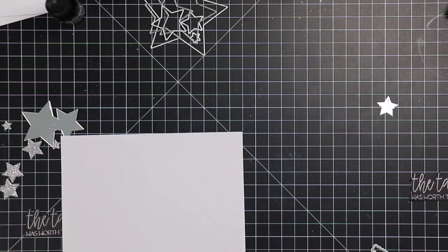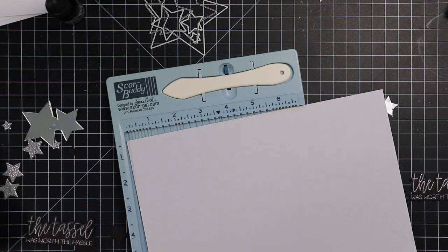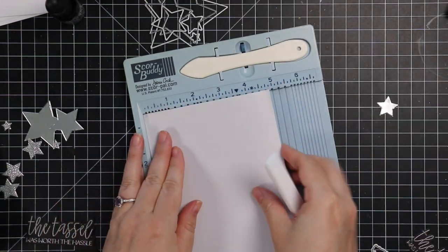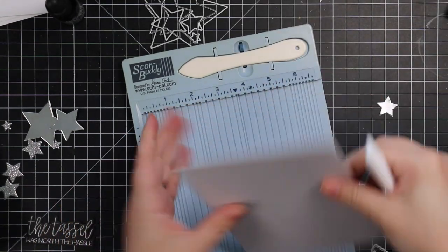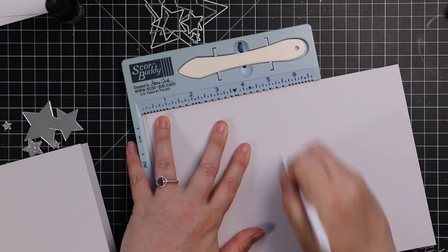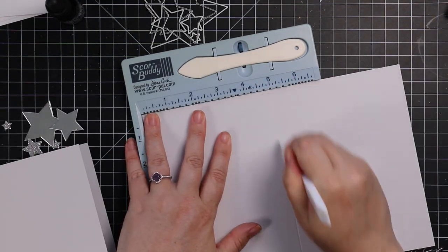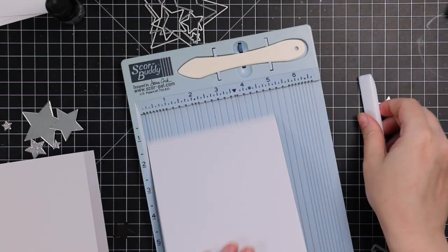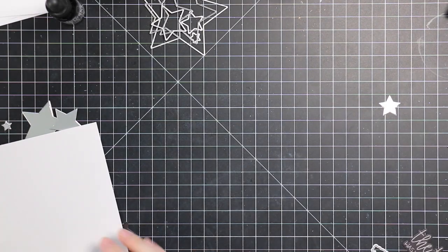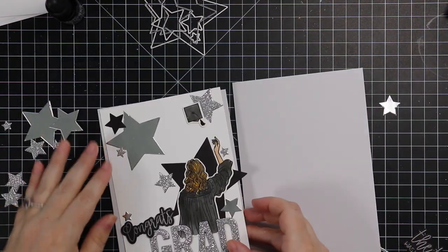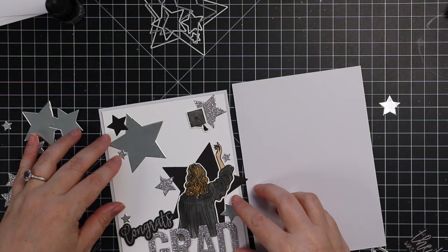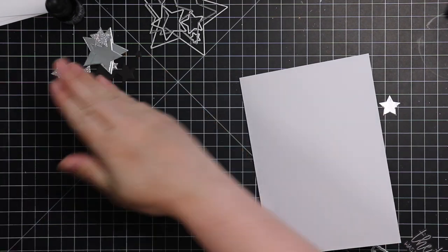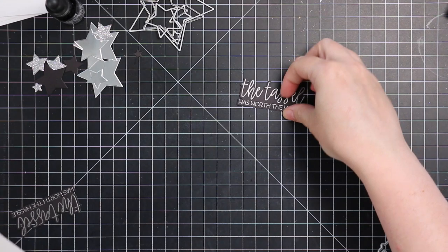For my card bases, I've got some light gray cardstock that I had cut down to 10 inches by seven inches. And I'm scoring it at five inches. So that'll be a side folding five by seven card. Did that twice. So I've got both card bases here out of this light gray cardstock.